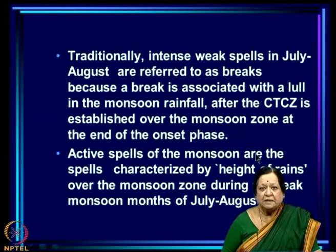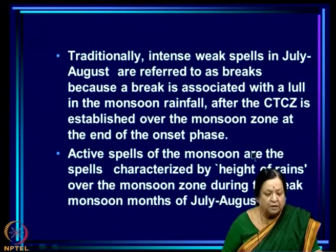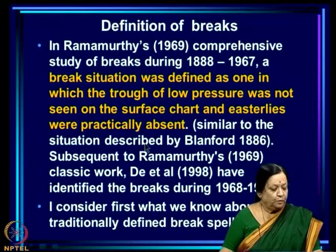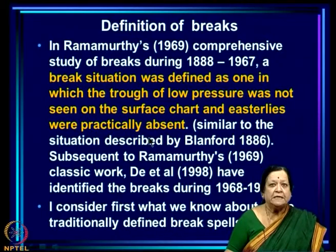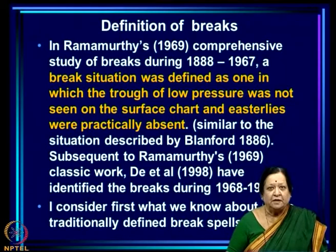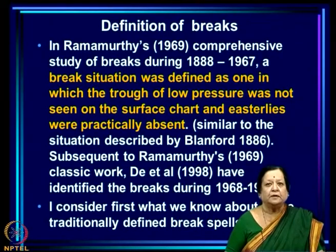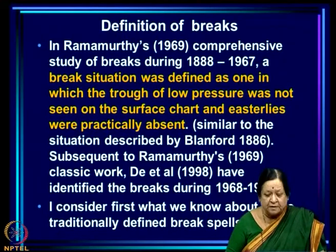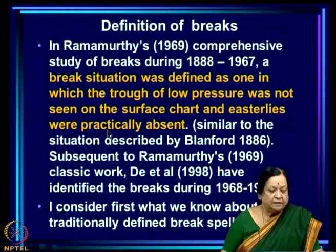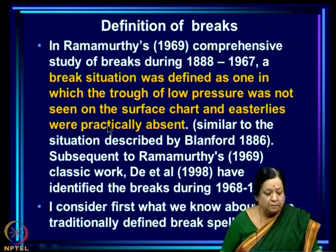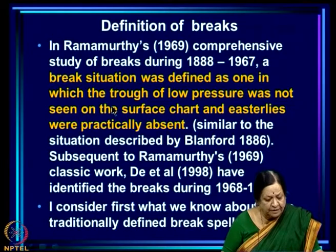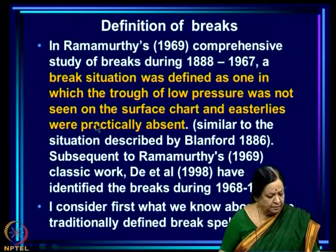Active spells of the monsoon are spells characterized by what Blanford called the height of rains over the monsoon zone during the peak monsoon months of July and August. The first comprehensive study of breaks was by Ramamurthy in 1969, who studied breaks during 1888 to 1967. Break was defined by something that Blanford described — namely the fact that the trough moves to the foothills of the Himalayas and therefore there are no easterlies anymore over the Indian region. The break situation was defined as one in which the trough of low pressure was not seen on the surface chart and easterlies were practically absent.